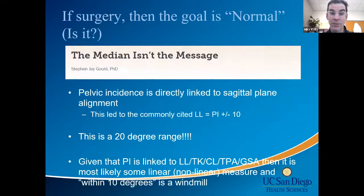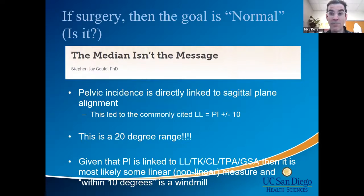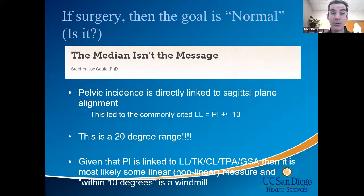At least the SRS-Schwab classification started us on the course of PI-LL relationships. But is the goal 'normal' — normal according to population means? Stephen Gould, a statistician diagnosed with cancer, said 'The median isn't the message.' When told his median survival was 1.7 years, he said 'I don't care about median survival, I need to know what my survival is.' That's where we need to take all of this — towards personalized medicine with individualized targets.